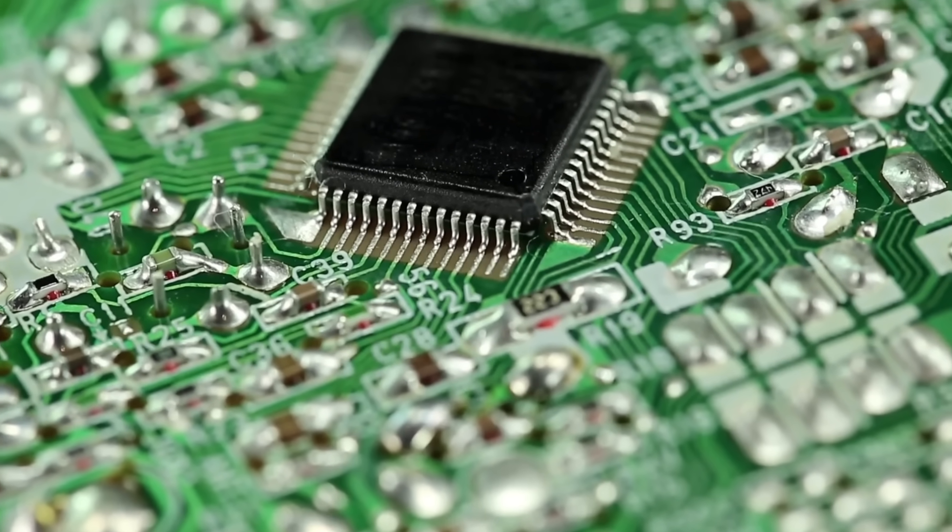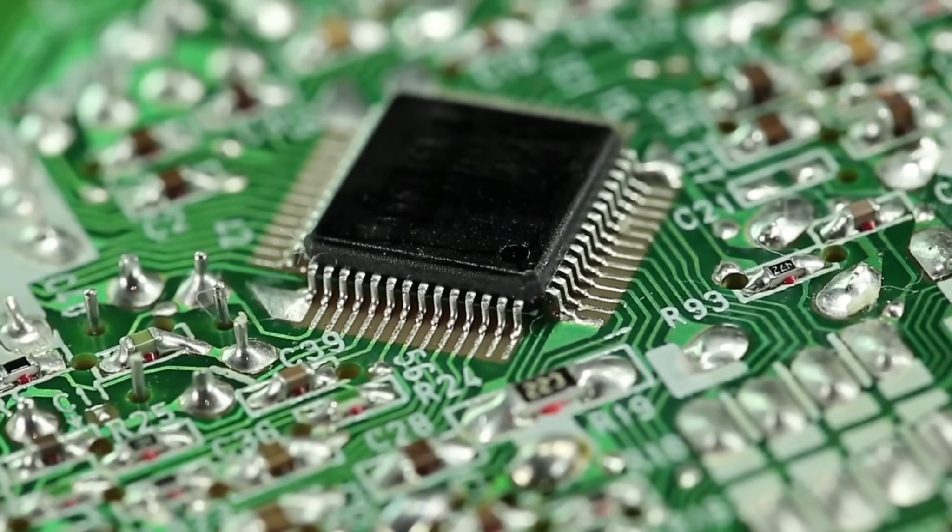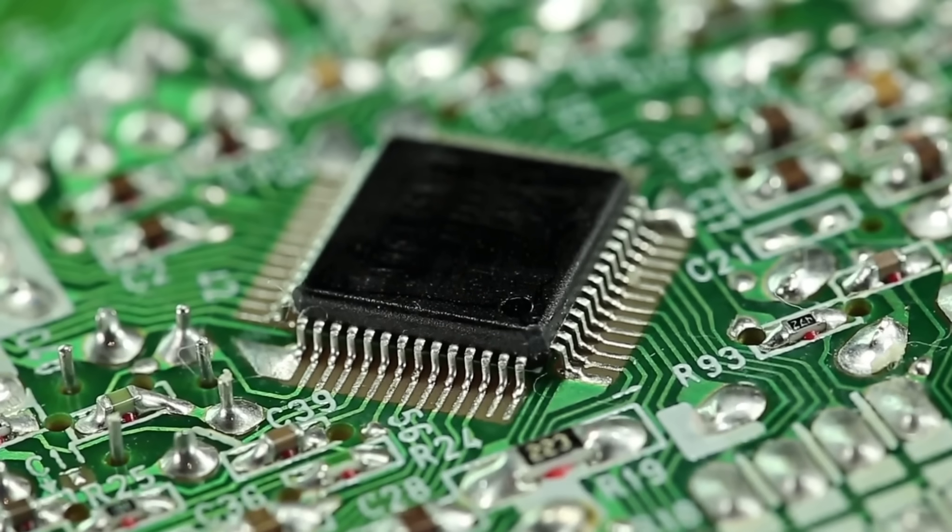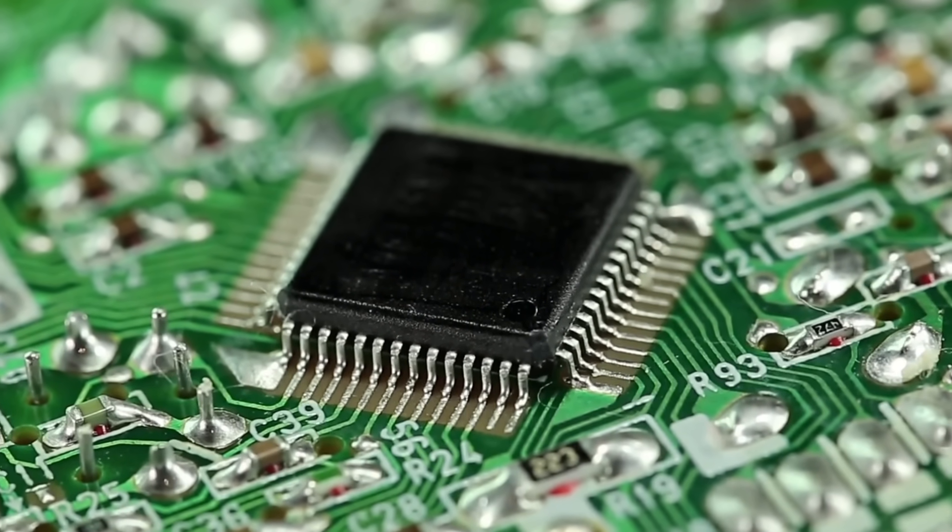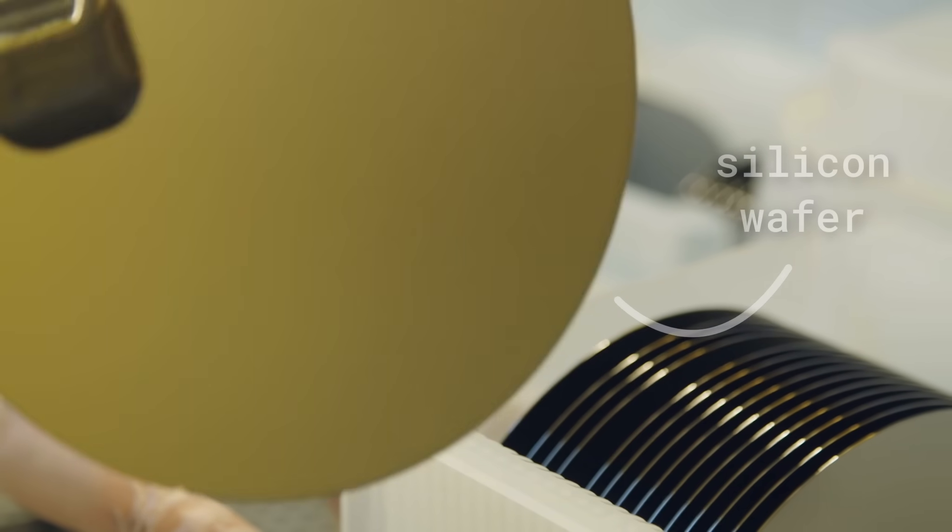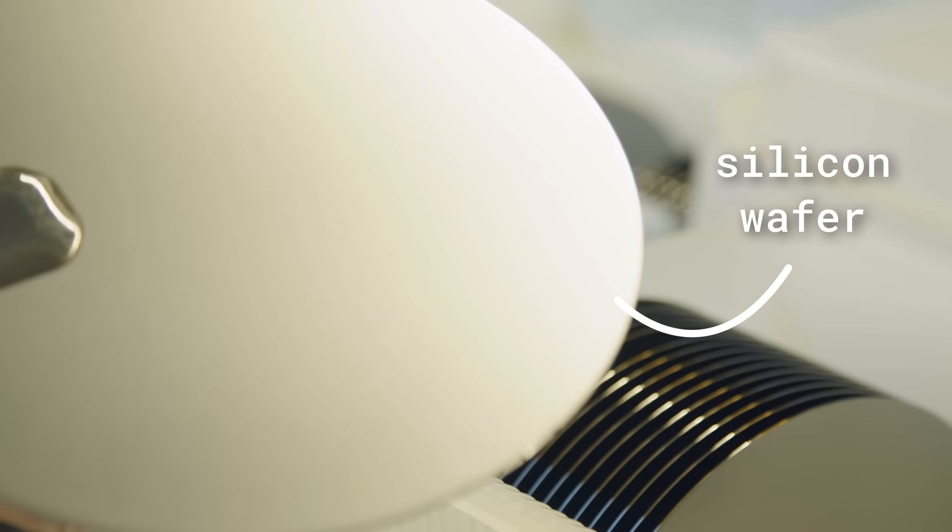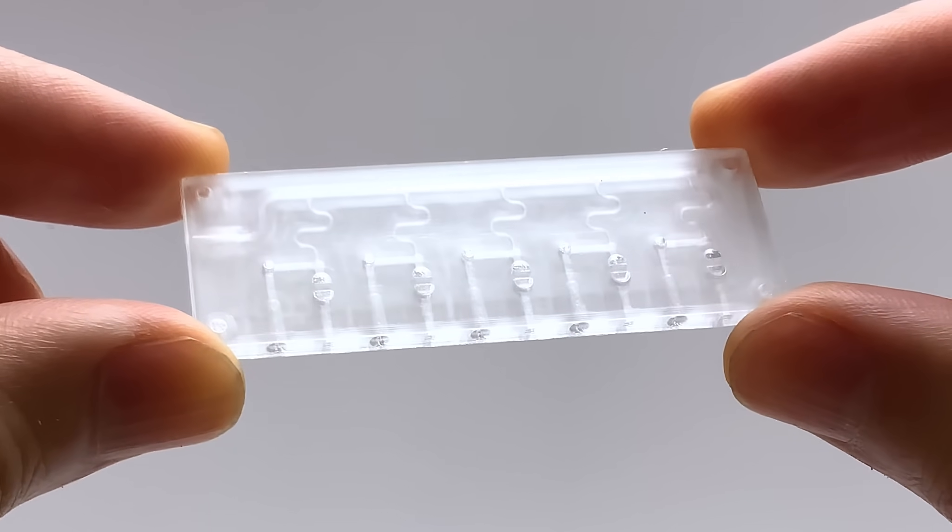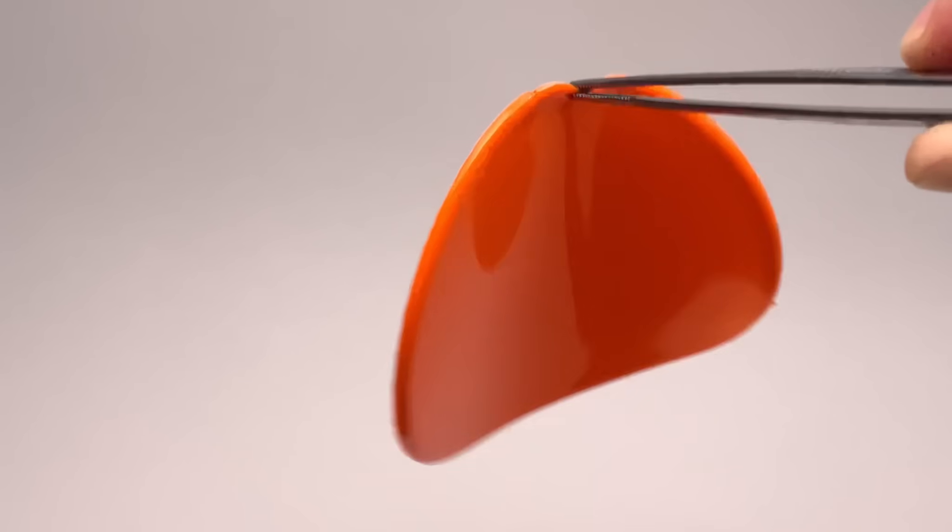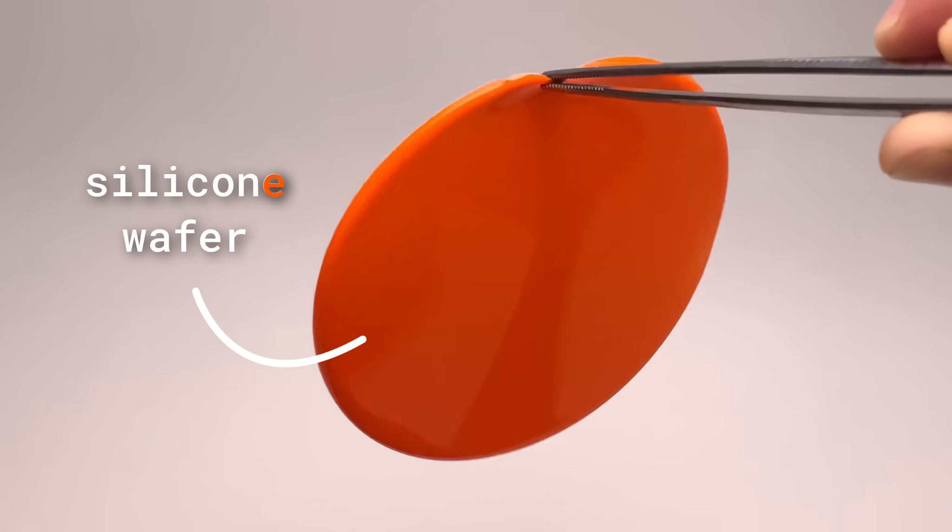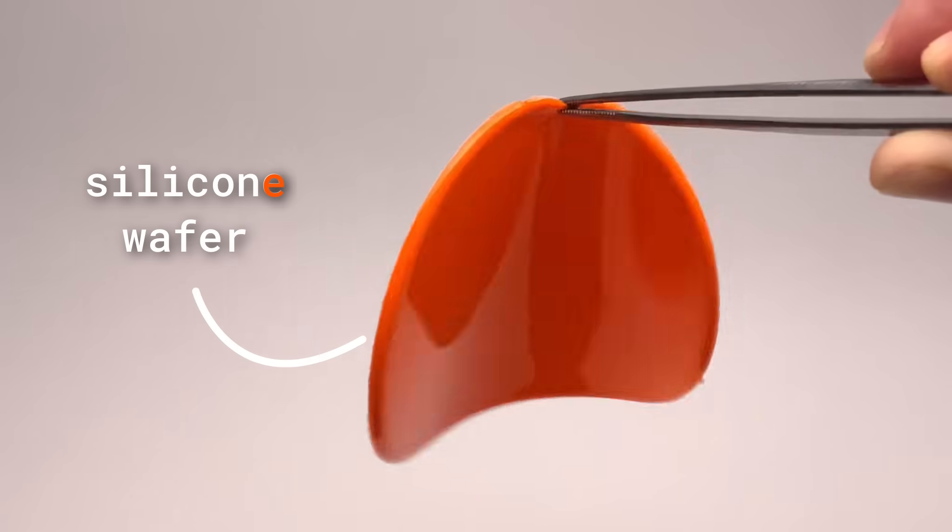The closest thing humans have made to artificial brains are microchips. Hidden inside the black epoxy packaging, tiny electronic circuits etched into silicon. They start out as these thin slices called wafers. But today we're building a very different kind of chip, one that uses a wafer made from squishy silicon and runs on vacuum.